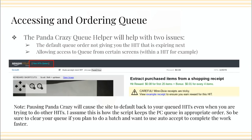The PandaCrazy Queue Helper script — I recommend it because it helps you with two things. First, it helps with the default queue ordering, which was an issue in the old website. Many script writers embedded tools to help with that issue so people didn't realize it, but it's still there in the new website. Basically, it gives you the HIT that's expiring next to work on automatically when you're working out of your queue, which just makes sense — but it's not the way it works out of the gate.